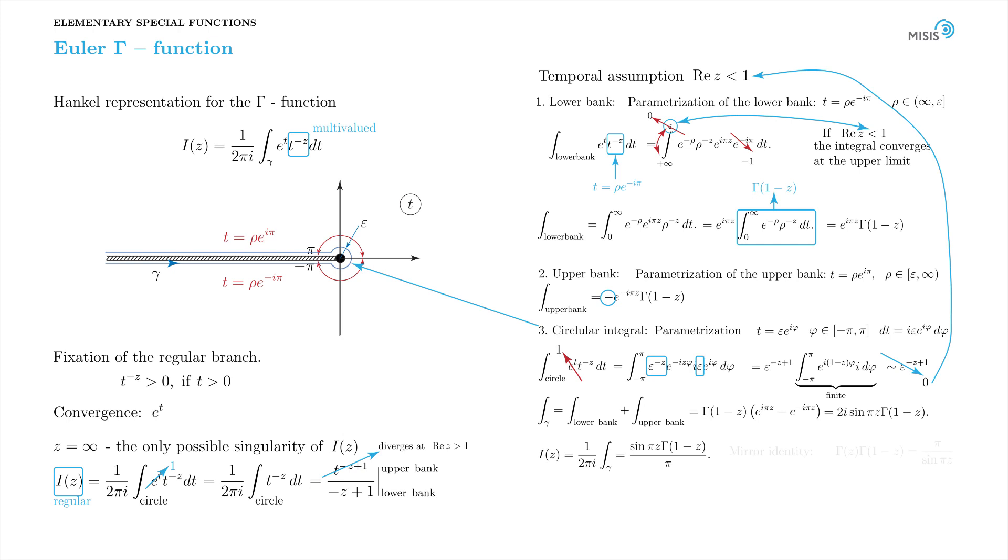But now we use the mirror relation. We see that the right-hand side function arranges itself into a simple 1 over gamma function of z. And so we've just established the desired Hankel representation of the gamma function. As we remember, this result was derived under the assumption real part of z is smaller than 1. But of course, it holds for any finite z.